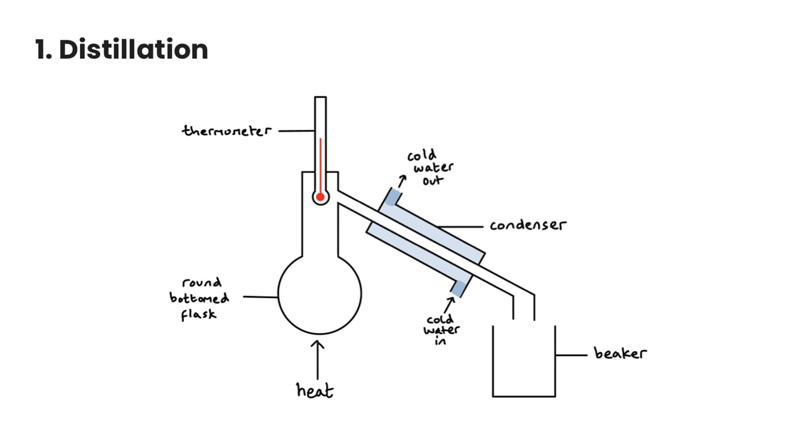Let's start with distillation. Distillation is a process that's used to separate a homogeneous mixture of two miscible liquids. The key point here is that one of the liquids has to have a lower boiling point than the other liquid, and this is based on intermolecular forces.